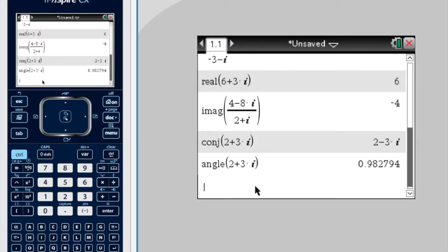Okay, so that's how to find the angle, which helps you put that number, 2 plus 3i, into mod arg form or polar form.